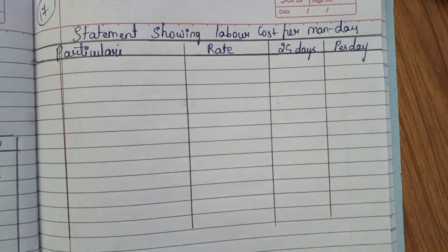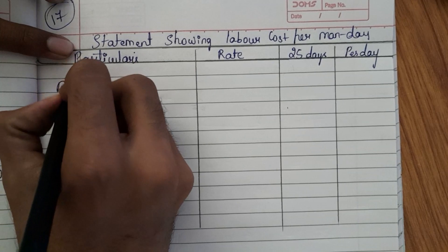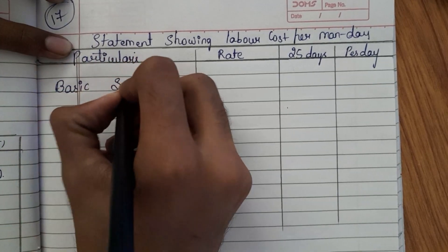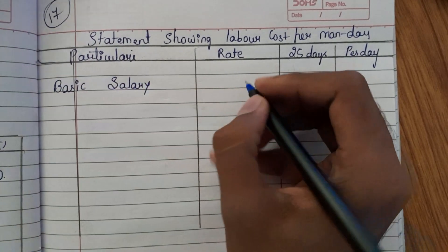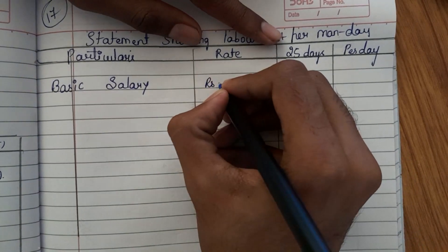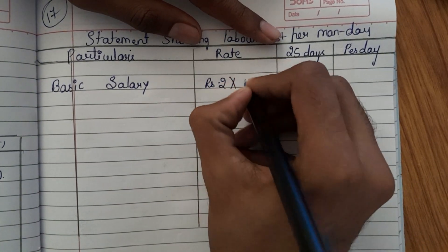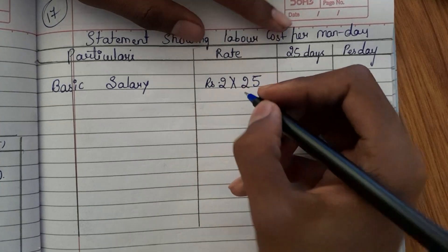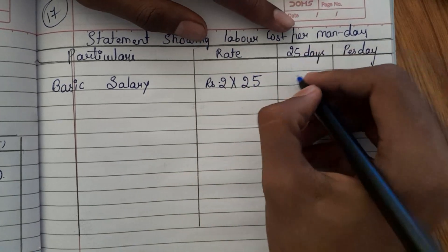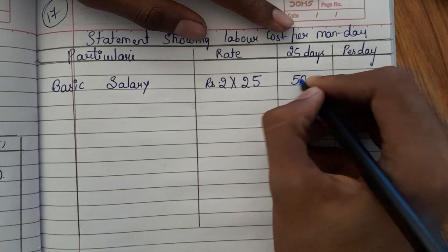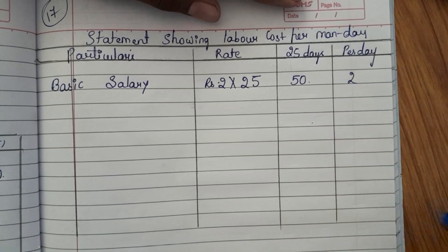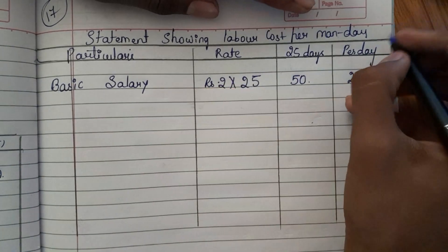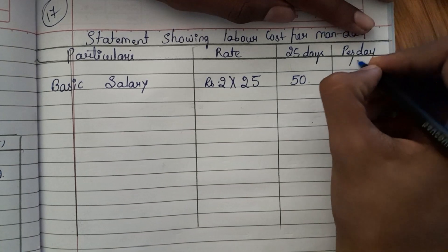The first component to calculate is basic salary. Basic salary is rupees 2 per day, so for 25 days it is rupees 2 into 25, which equals rupees 50 for 25 days. For per day it will be rupees 2. To get the per day value, divide the 25-day value by 25.